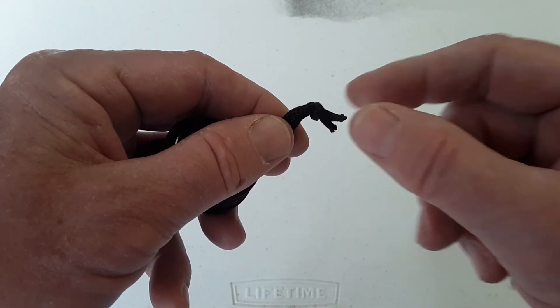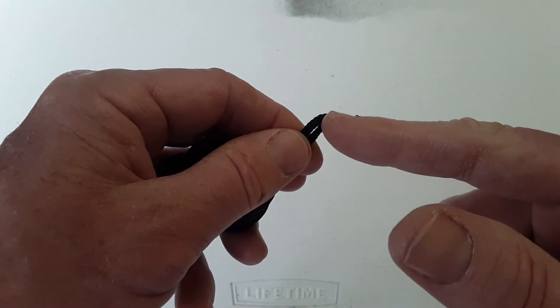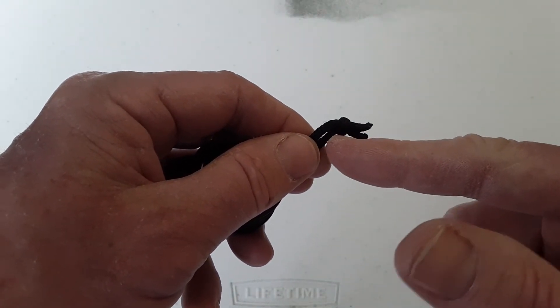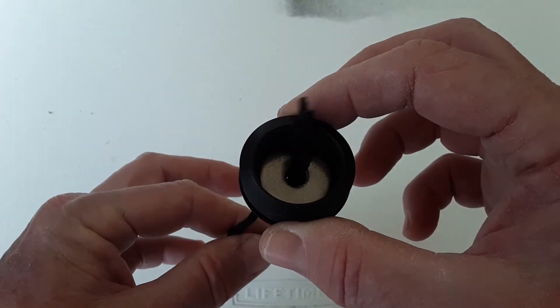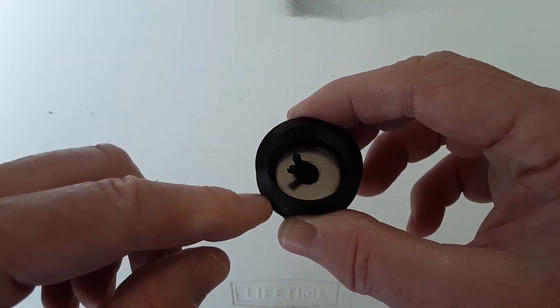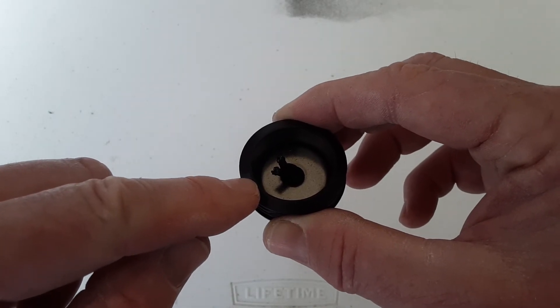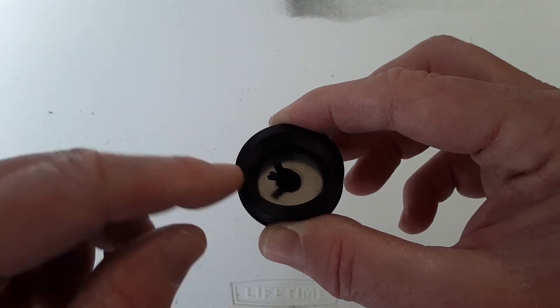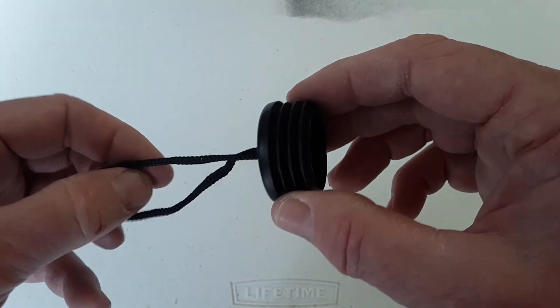And then what I'm also going to do is take some marine goop and put a layer on the backside of this knot. So when you pull the knot down the center, that goop will fill any holes that might be in the cap or the fender washer. And then it also gets everything in there nice and tight. And once it dries, it won't move.